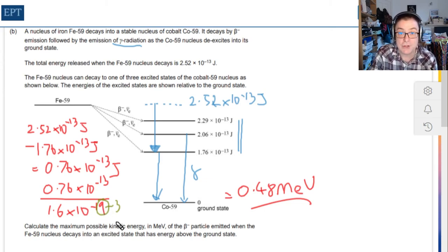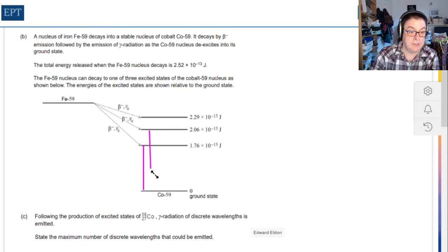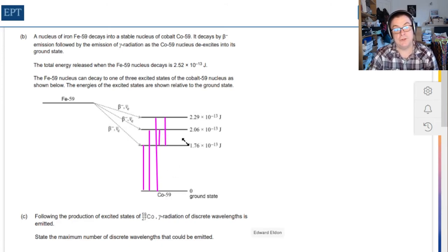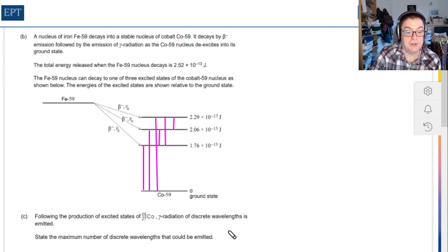In part C, we're asked to consider how many possible discrete gamma ray wavelengths or frequencies we can obtain as this nucleus decays. Going down from the three levels to the ground state, we get three possibilities. Going down to the 1.76 level, we have two possibilities. Going down to the 2.06 level, there is only one. That means the total number of discrete gamma rays is going to be six.